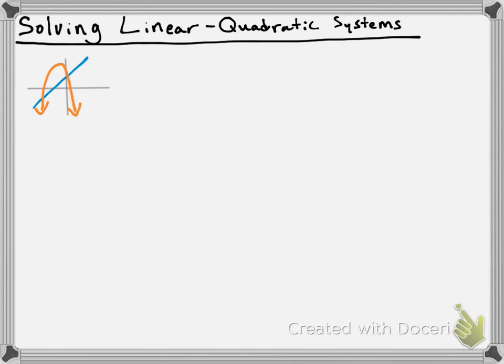But there are some other possibilities. Another one: my parabola could come up and just barely touch the line at one point, in which case I'll have one point of intersection. Or lastly, I could have a line where the parabola goes entirely underneath or entirely above that line, where they won't cross at all — giving me no solutions.